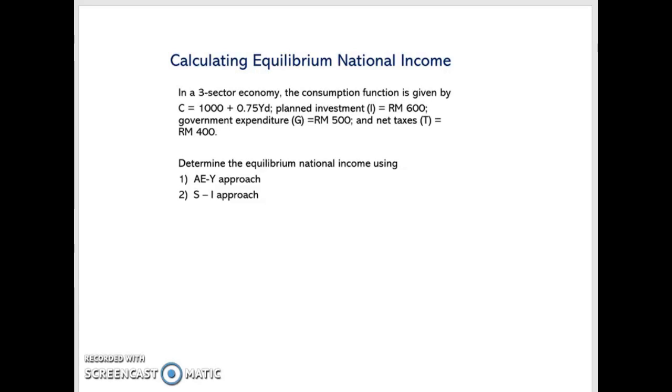When Y equals to C plus I plus G. Now you got all the information in the question. Just plug in. C equals to 1,000 plus 0.75. YD is disposable income which is Y minus T. And you got investment RM600 and government expenditure is RM500.